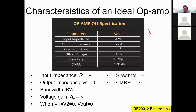Here are the characteristics of the practical IC 741 op-amp. The input impedance is not infinity — it is only about 2 megaohms. The output impedance is not zero — it is 75 ohms. The open-loop gain A is not infinity — it is 10 to the power of 5. The offset voltage is 1 millivolt, and the slew rate is 0.5 volts per microsecond.